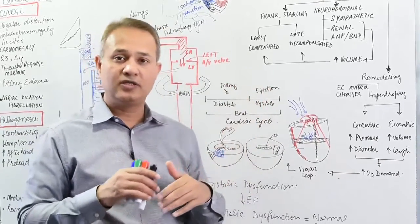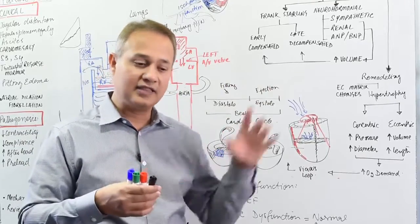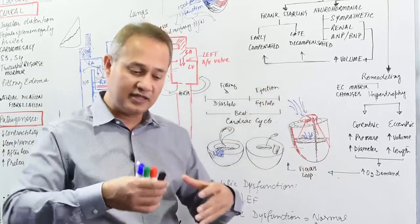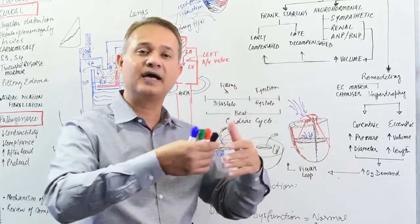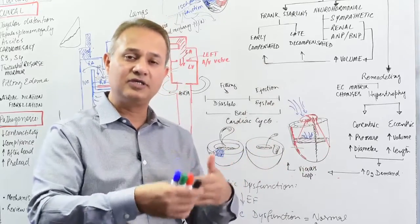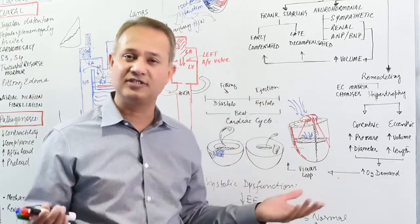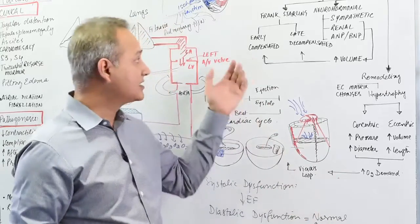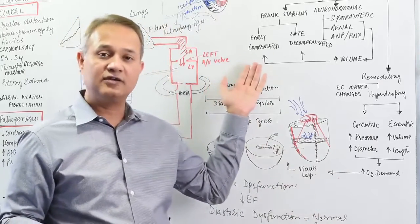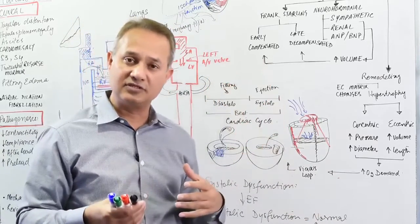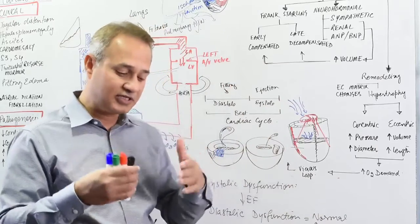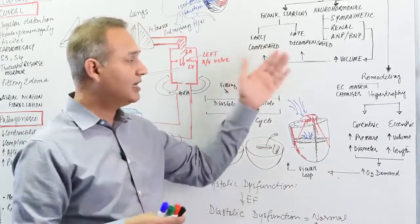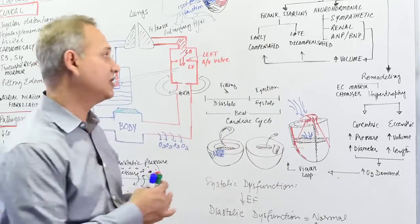Compensated failure is where cardiac output went down, then compensation mechanisms brought it sufficiently back up. The patient didn't feel much or feels okay at rest. Frank-Starling helps in the early days as a compensation mechanism—that's compensated cardiac failure. Later it becomes decompensated cardiac failure.